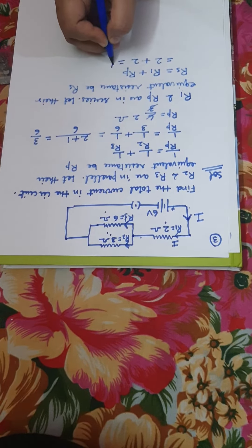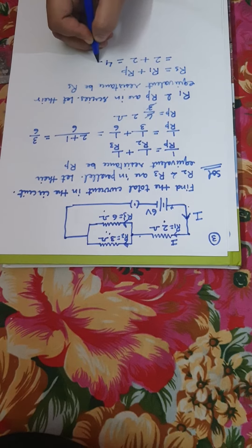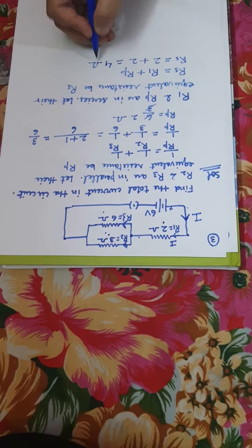So the total resistance will be 4 ohm. So the total resistance of the circuit is 4 ohm.